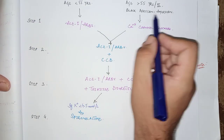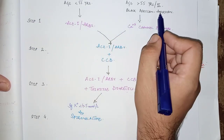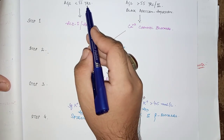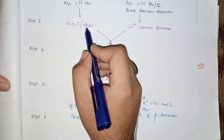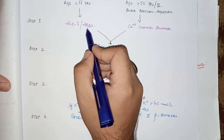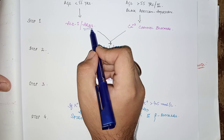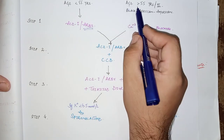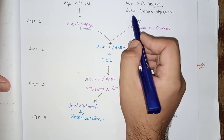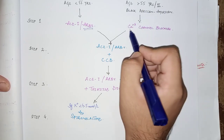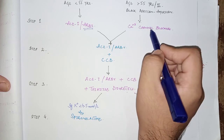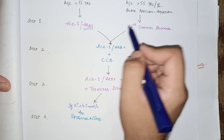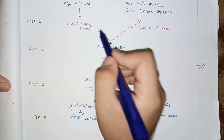The management algorithm for hypertension: if the patient's age is less than 55 years, start ACE inhibitors or low-cost ARBs — ARBs are now commonly used because ACE inhibitors cause dry cough. If the age is more than 55 years or the patient is Black/African-American, the first-line agents are calcium channel blockers, most commonly amlodipine and nifedipine.